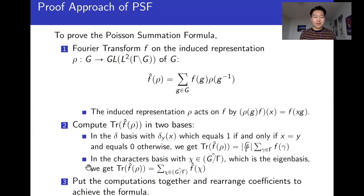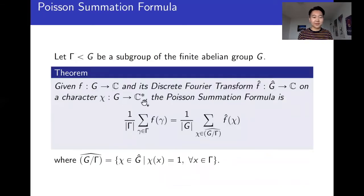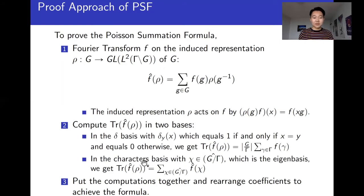The important step now comes when we compute the trace of F hat of rho in two different bases. So firstly, we compute it in the delta basis. Delta basis is just this set of delta functions that identify where the elements of G are. And computing this gives us this expression where we're summing over only elements of gamma because by the induced representation, we are actually invariant on the cosets of gamma. And that's why we're summing over gamma itself.